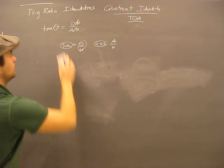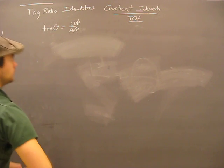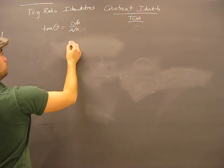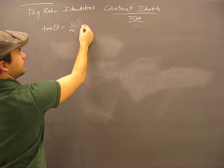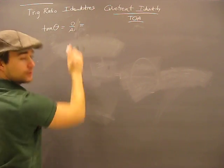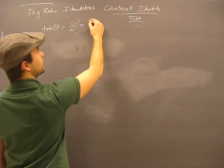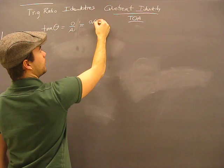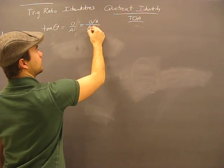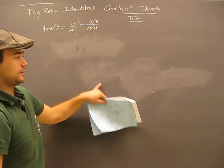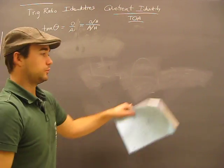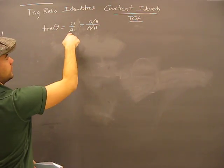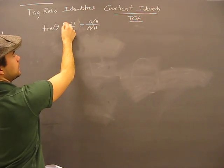So really, tangent of theta is going to be the same value as the fraction that looks like this: opposite over hypotenuse divided by adjacent over hypotenuse. Remember just like this example, it'll be the same value point eight, so therefore the equal sign is true.